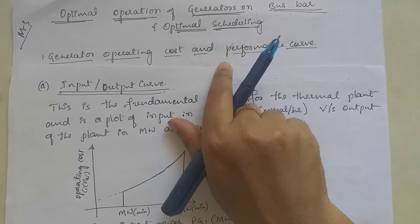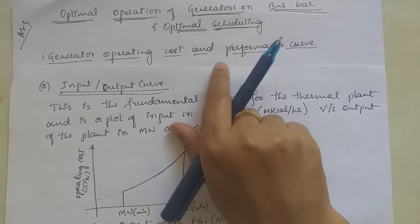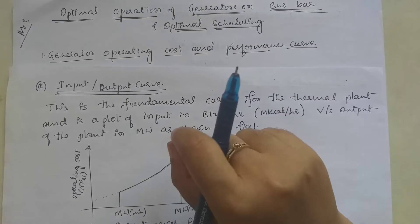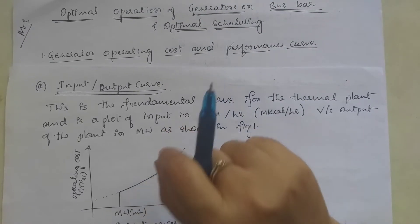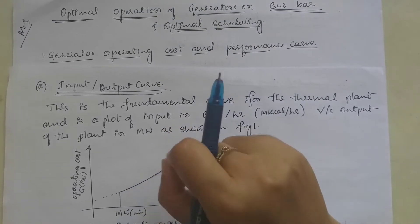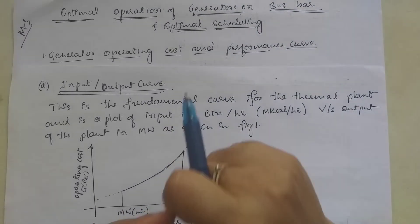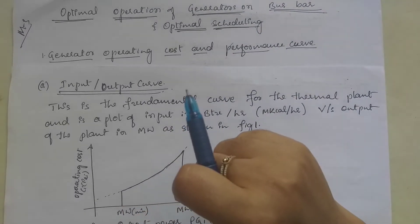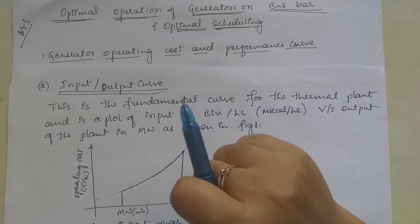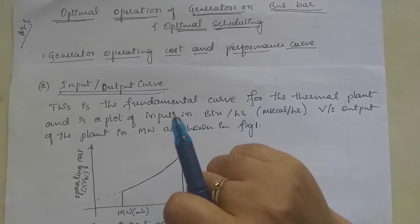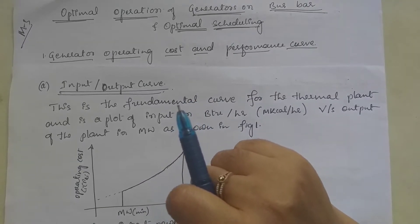But fuel cost is the only cost considered to be variable. The fuel cost is considered in the case of thermal power plant, nuclear power plant, as well as a hydel power plant.